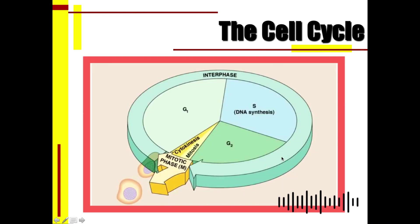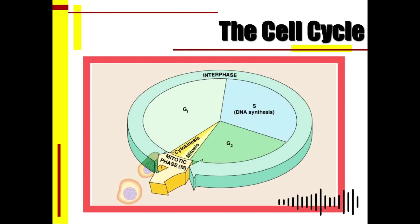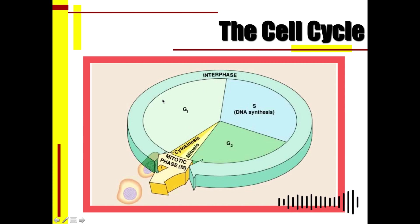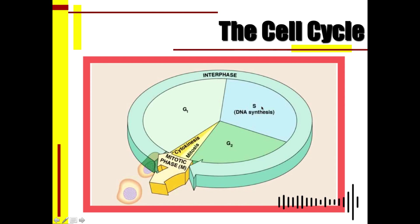The stages of interphase begin with Gap 1, or G1. During G1, the cell is absorbing nutrients, growing, and doing its job. At this stage, the small cell is simply absorbing and carrying out its normal functions.